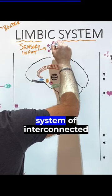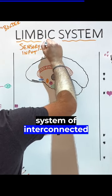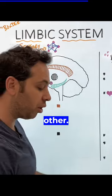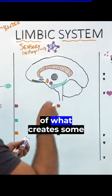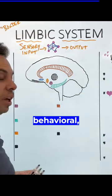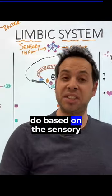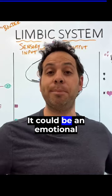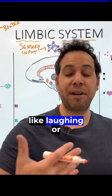So you create this giant system of interconnected parts that talk to each other that creates some sort of output. Which could be behavioral - some sort of action you do based on the sensory information that comes in. It could be an emotional output, like laughing or crying.